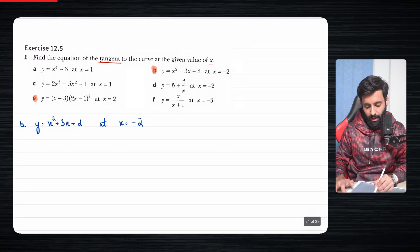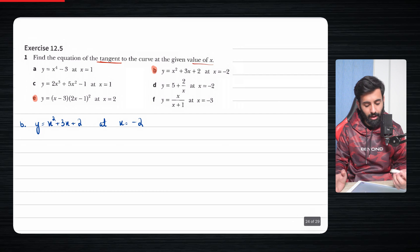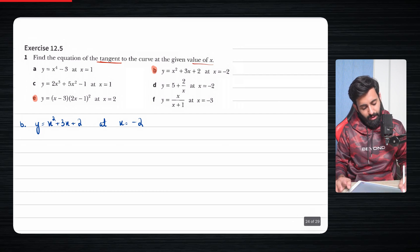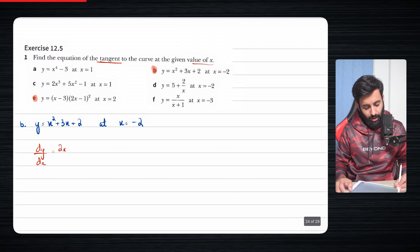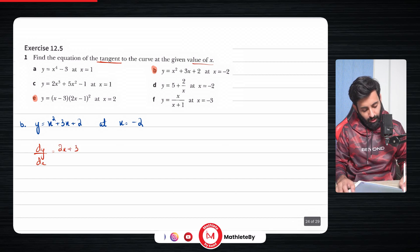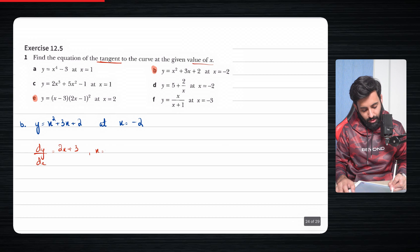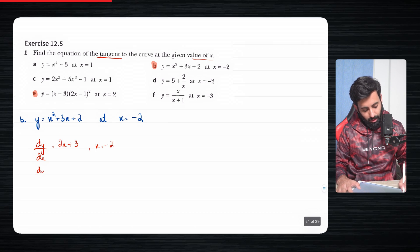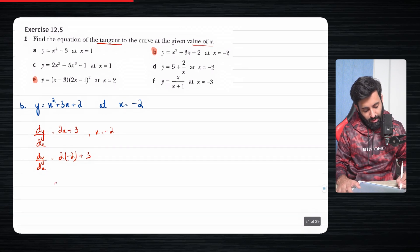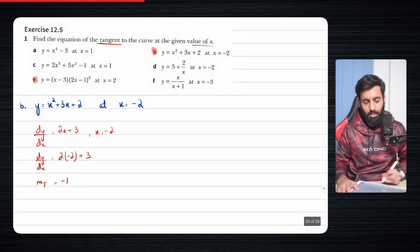Notice that we only have the value of x, which means we need to find the value of y. First things first, you have the equation of the curve and you differentiate it. Then you plug in the value of x, which is minus two. That means you now have the gradient of tangent. Two into minus two is minus four; minus four plus three is minus one — and that is the gradient of tangent.